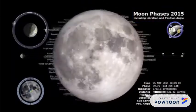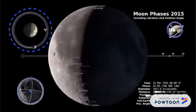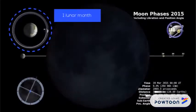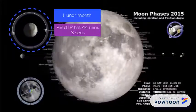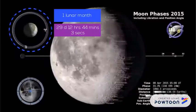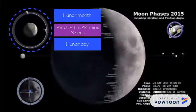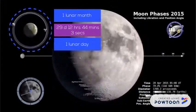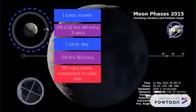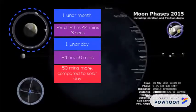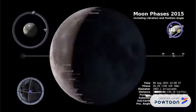This is the moon phases of 2015 produced by NASA. One lunar month is the time needed for the moon to go around the earth and return to the same position. One lunar day is the time needed for the earth to turn around its axis, and is basically 15 minutes more compared to a solar day.